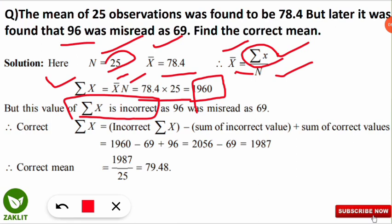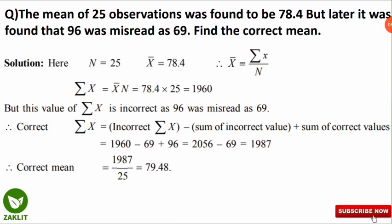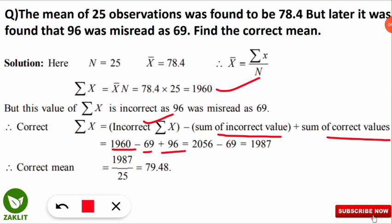To find the correct ΣX, use the formula: Correct ΣX = Incorrect ΣX − Incorrect Value + Correct Value. Substituting: Correct ΣX = 1960 − 69 + 96 = 1987. This is the correct sum of all observations.